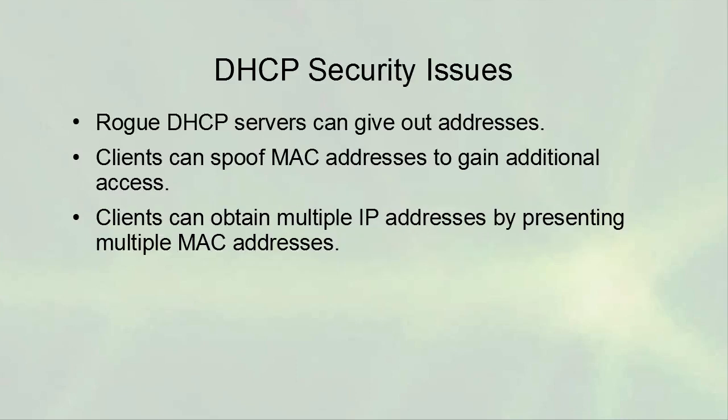Some security issues with DHCP: if you have rogue DHCP servers, they can give out addresses and that can be a problem — it could mean security issues or someone giving you incorrect information. Sometimes someone will plug a wireless access point or home router into your network backwards and it will start issuing addresses. You can block that on the switch, but if it's not blocked it can cause all kinds of havoc.